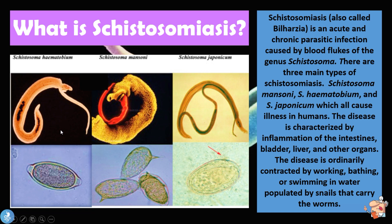In this image on the left side of the screen we can see what these blood flukes look like in their adult forms, and we also see what the egg form looks like for each of them. Now that we know the basics of Schistosomiasis, let's take a closer look at how one actually contracts this disease.